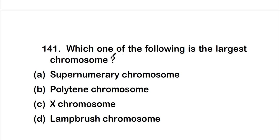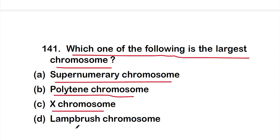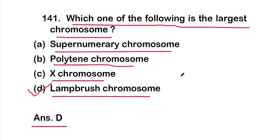Hello friends, welcome back to a new video on MCQs on Mendelian genetics — this is Part 8 of the series. The first question, Q141, asks: which one of the following is the largest chromosome? Options are: (A) supernumerary chromosome, (B) polytene chromosome, (C) X chromosome, or (D) lampbrush chromosome. The correct answer is option D — the lampbrush chromosome is the largest chromosome.